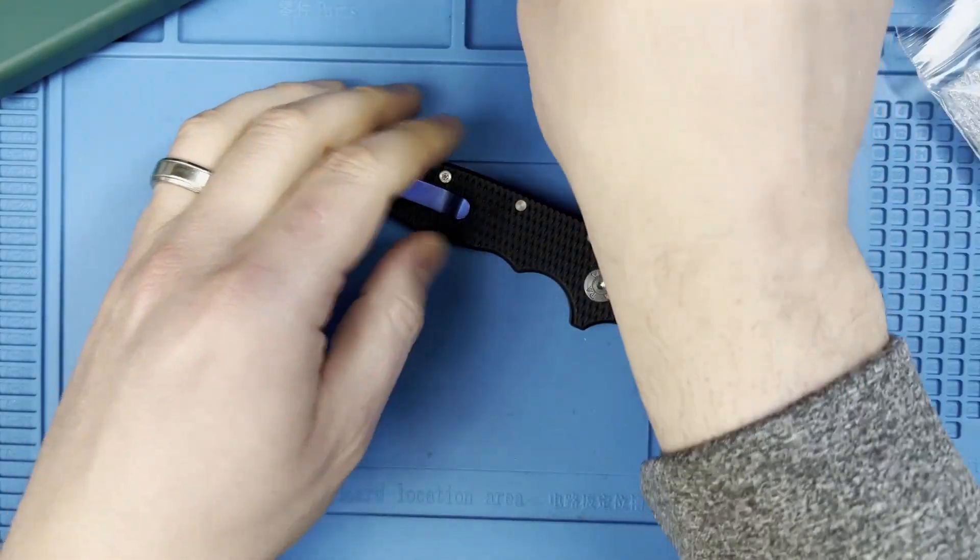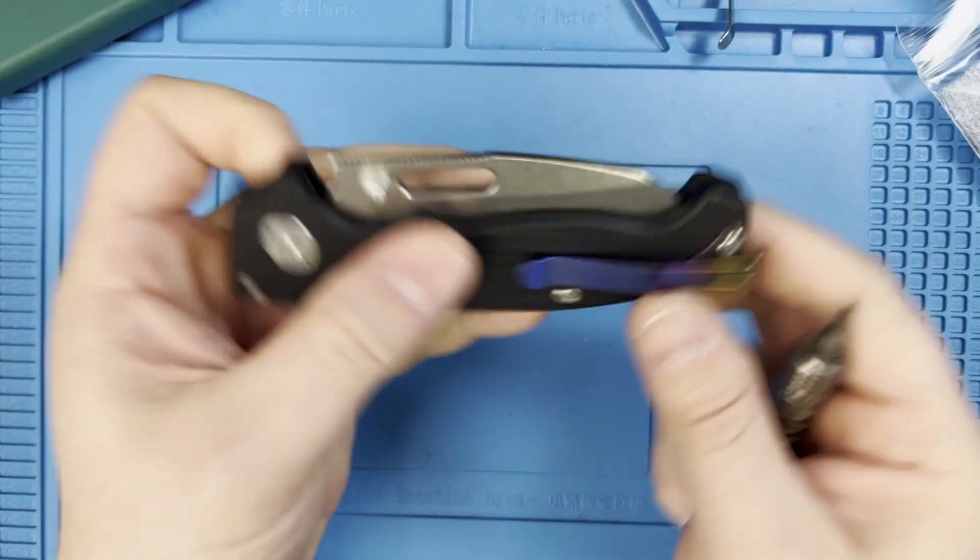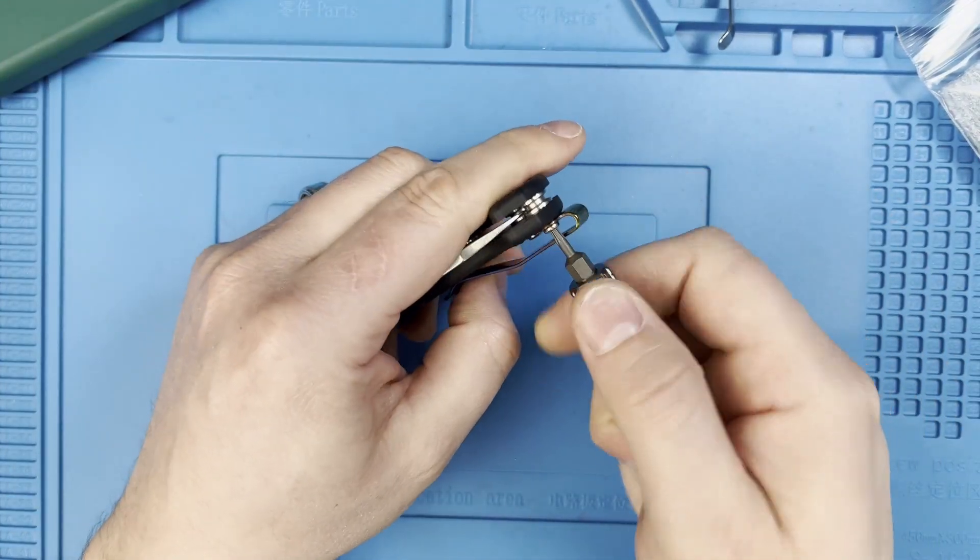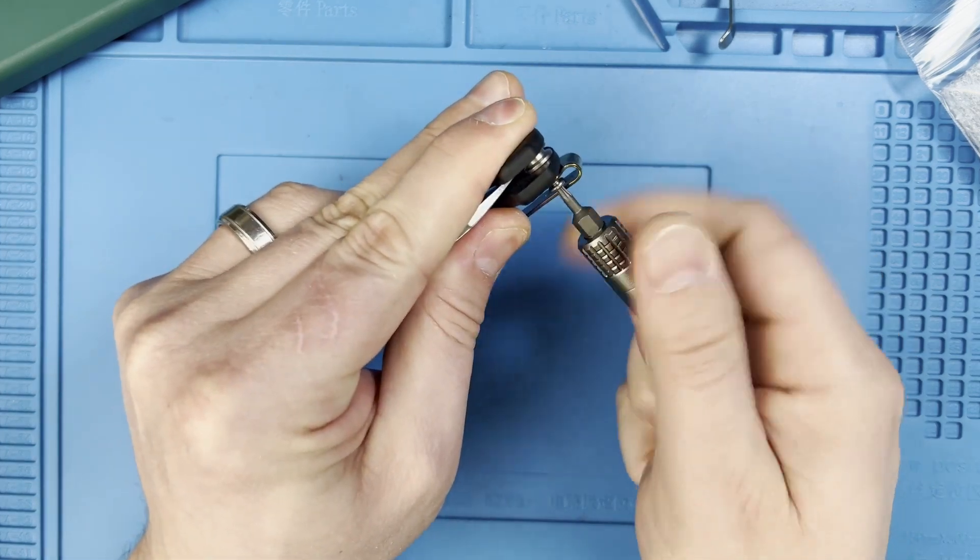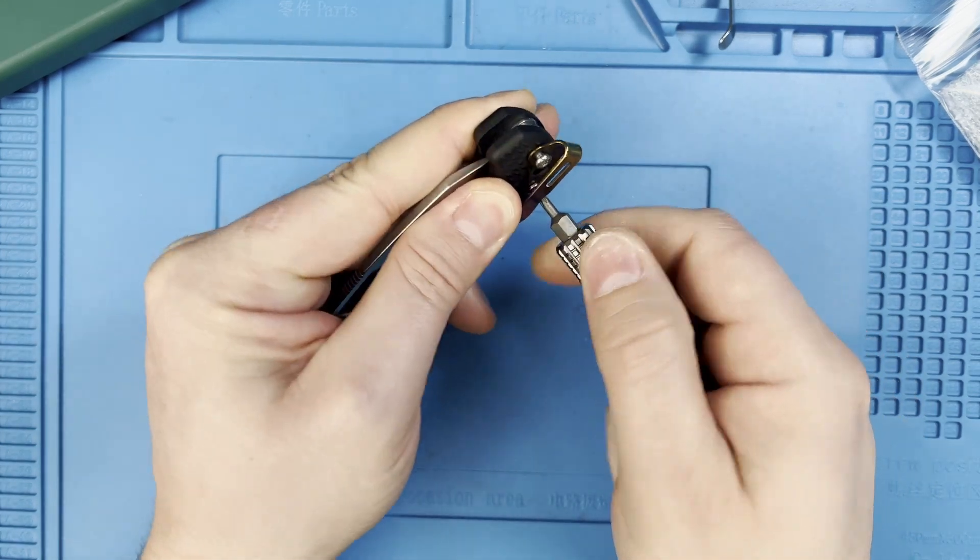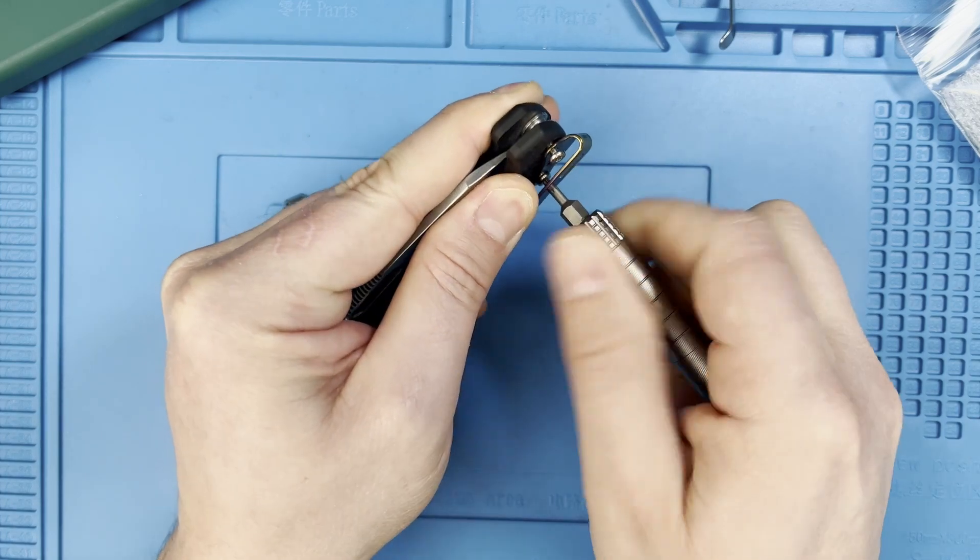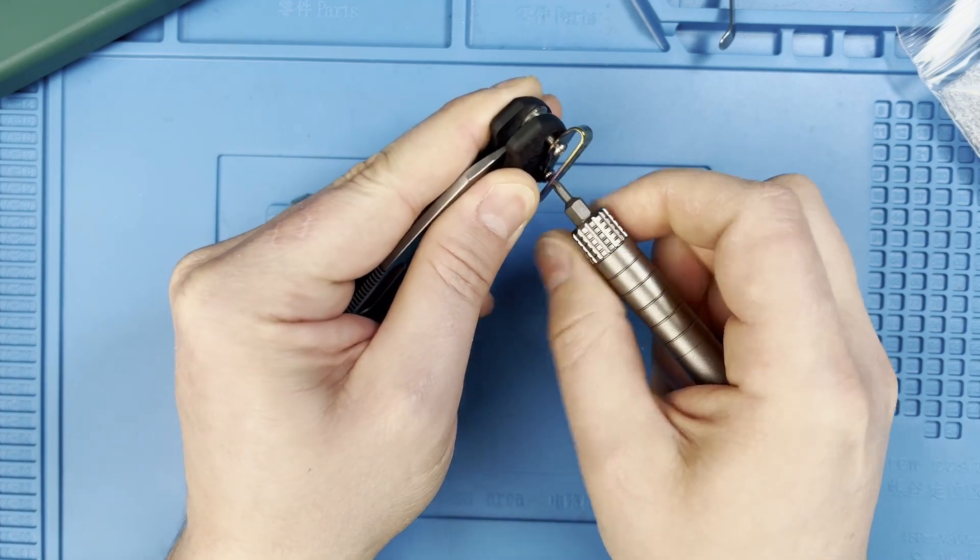So we'll start by closing the knife and taking the pocket clip off, and I think I'm going to leave this raw. I could change my mind down the road later, but I think right now I'm just going to leave it raw and leave the pocket clip anodized for that little bit of pop of color.